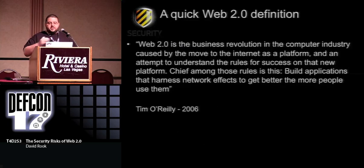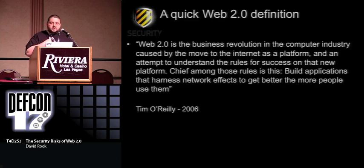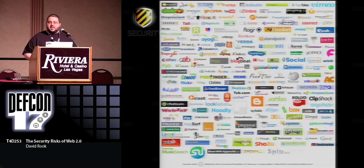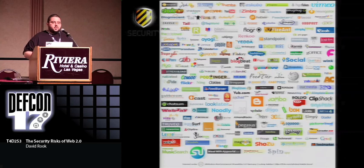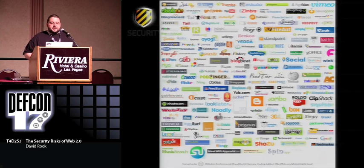On the screen is Tim O'Reilly's famous quote about what Web 2.0 is. But instead of running through that, I've got an image here which probably allows you to understand the types of websites we're talking about. So Facebook, Wikipedia, YouTube — those types of websites are the kind of sites we're talking about today.